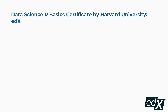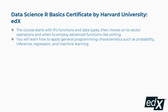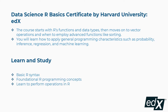Third is Data Science R Basics Certificate by Harvard University on edX. The course starts with R's functions and data types, then moves on to vector operations and when to employ advanced functions like sorting. You will learn how to apply general programming characteristics such as probability, inference, regression, and machine learning. Concepts covered include basic R syntax, foundational R programming concepts, and how to perform operations in R.